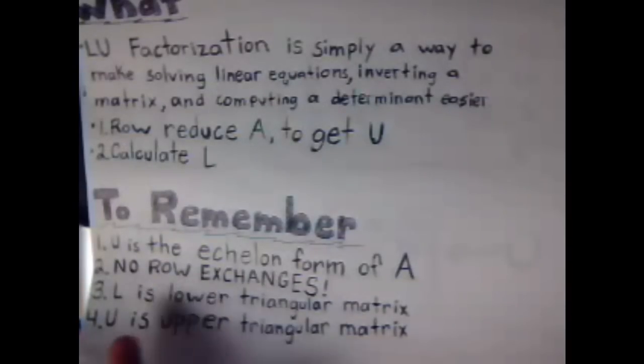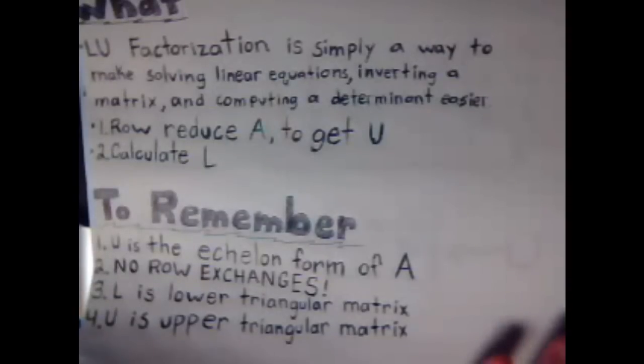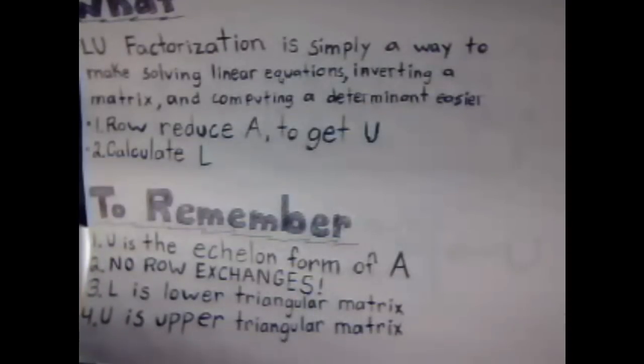Make sure when you're doing this, though, you do not row exchange. If to get U into echelon form, you need to row exchange at any point, then you cannot factorize what matrix A is. So then none of this even matters to you. You're going to have to go and do it the hard way.